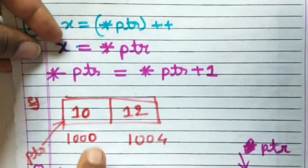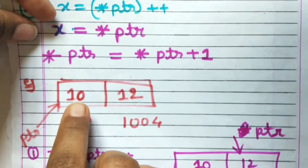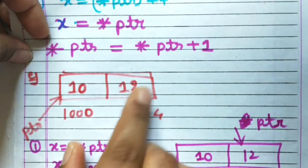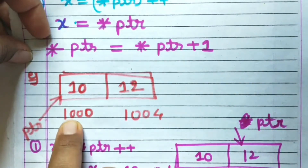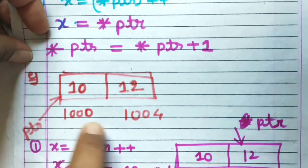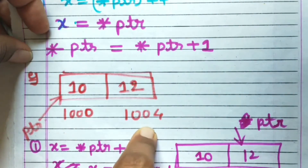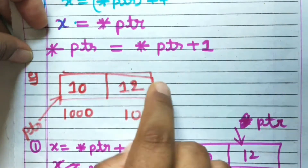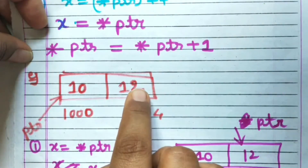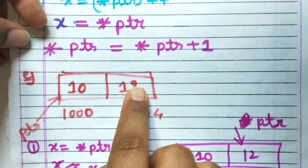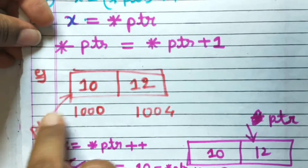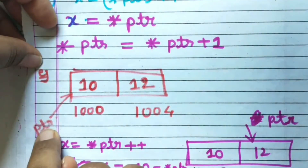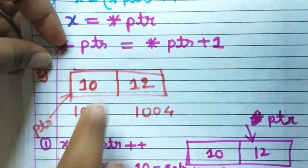We will understand these examples with the help of a memory representation. For example, this is a memory with addresses 1000 and 1004. At address 1000, the value 10 is present, and at address 1004, the value 12 is present. PTR points to address 1000. So when we dereference PTR, its value will be 10.